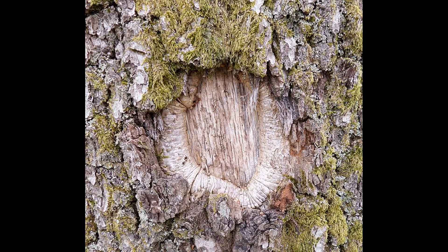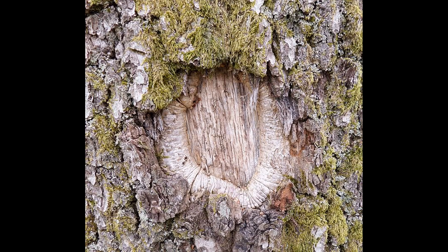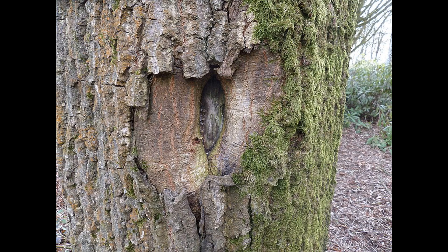Outside of the xylem is a layer called the phloem, and this is effectively attached to the bark itself. Often the two together are called the bast. The phloem is a series of vessels which can transport the products of photosynthesis from the leaves down through the tree into the roots.